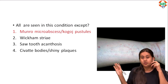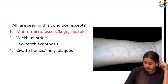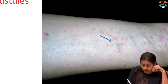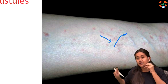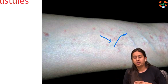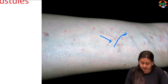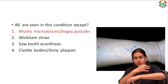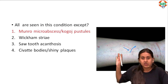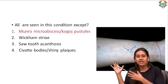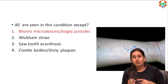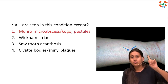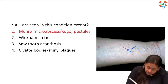Coming to the next question — all of the following are seen in this condition except. Look at this image: it shows lesions which are linearly arranged. This is a very classical Koebner's phenomenon seen in patients of lichen planus. Koebner's phenomenon means due to trauma there is development of lesions on the lines of trauma. This question is actually easy — we need to find the odd one out. The options include micro Munro abscess and Kogoj's pustule.